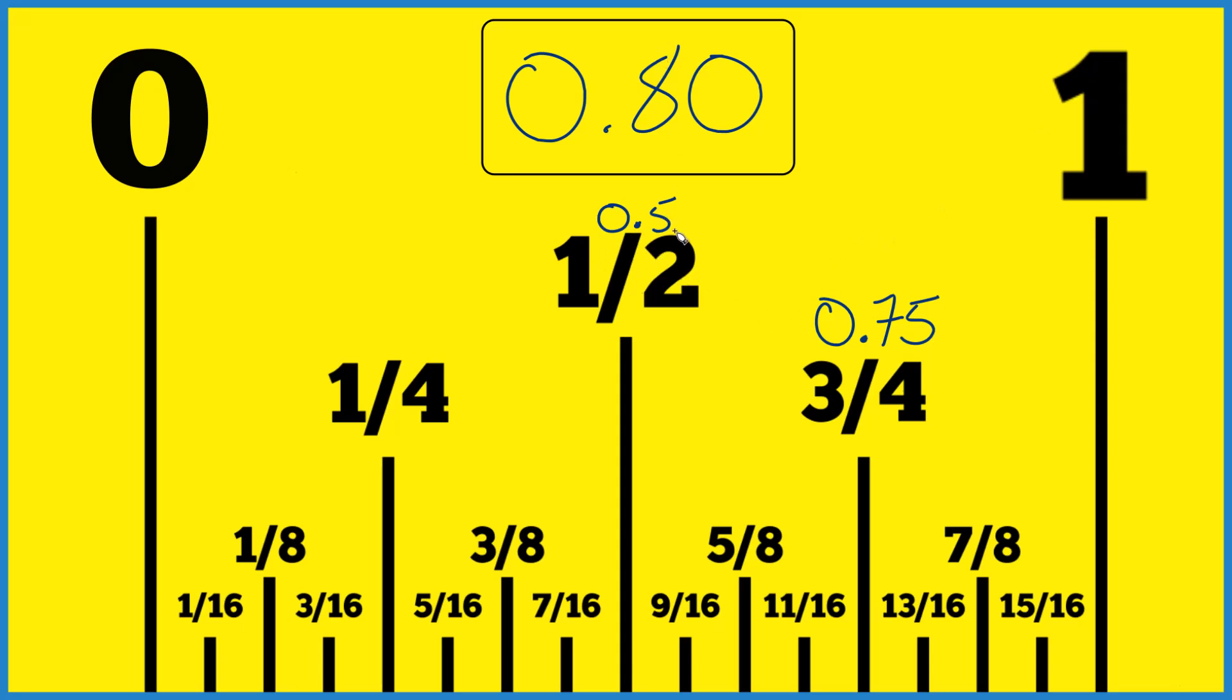And 1 half, that's 0.5, 1 divided by 2 is 0.5. And then 3 quarters of an inch, 0.75, 3 divided by 4.